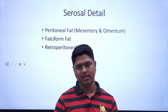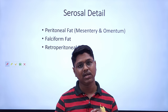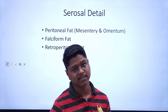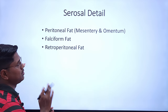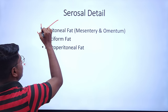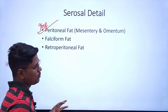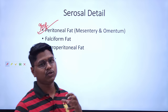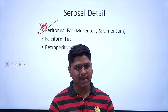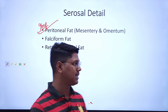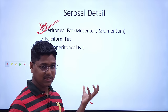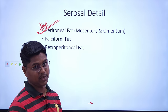Serosal detail refers to how conspicuously you can identify the borders or serosal margins of abdominal organs. If you can identify the organs very clearly, the serosal detail is good; if not, it is poor. The most important contributing factor is peritoneal fat — this fat provides a contrast medium to identify organs, similar to how you can see a white object against a black border.